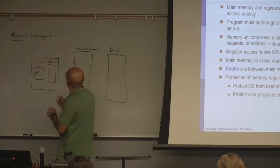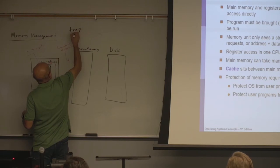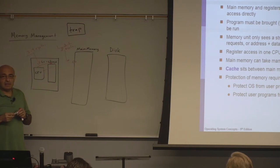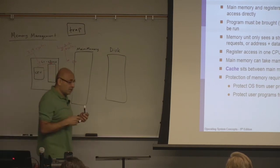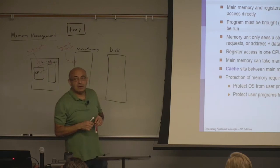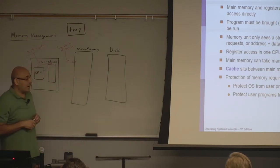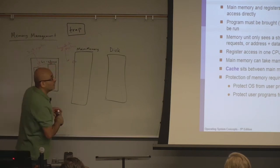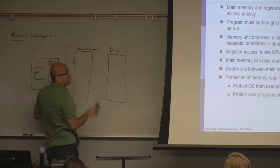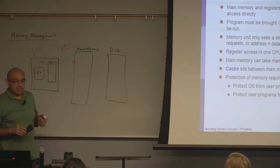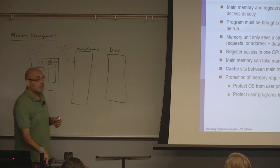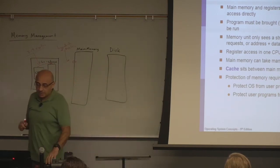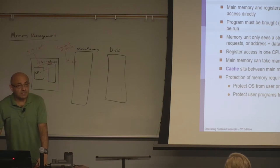When we say trap, we mean trapping this and giving control to the kernel to handle the situation. Usually the kernel is going to handle this by terminating the user program that is trying to make an out-of-bound memory access. So protection is going to be a very important objective of our study of memory management, as well as efficient use of memory.